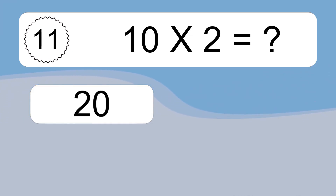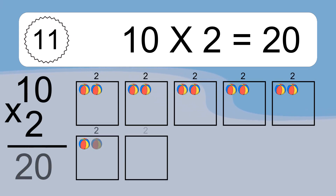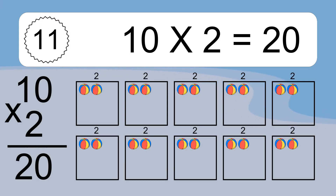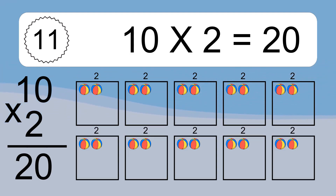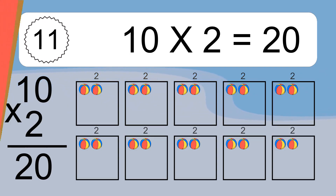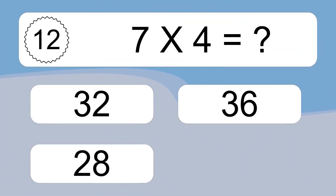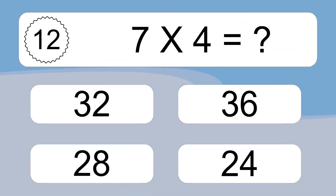10 times 2 equals 20. We have 10 boxes, and each box has 2 colorful balls inside. If you count all the balls in all the boxes together, you will have 10 times 2 balls. This equals 20 balls.